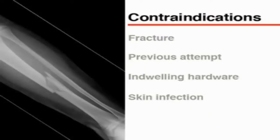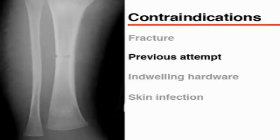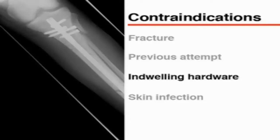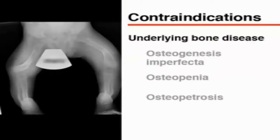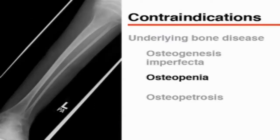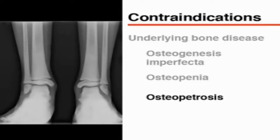Intraosseous access should not be attempted in any bone with a suspected or known fracture, proximal to a site, or in a bone in which a previous attempt was unsuccessful. Indwelling hardware from a previous orthopedic procedure may prevent successful cannulation. The presence of skin or soft tissue infection is a relative contraindication. Avoid cannulation in patients with underlying bone diseases such as osteogenesis imperfecta or osteopenia, and in patients with osteopetrosis, a condition with very dense bone in which cortical penetration may not be possible.